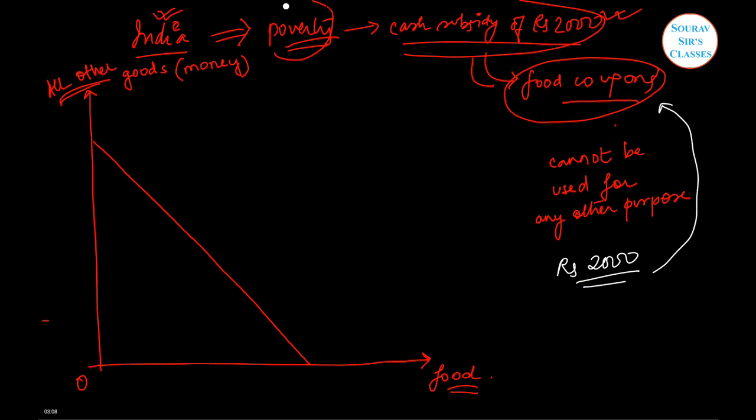So how will the budget line change? We will have something like this. Let me tell you first what this means. This actually means that the maximum amount of food that consumer A can consume has increased.